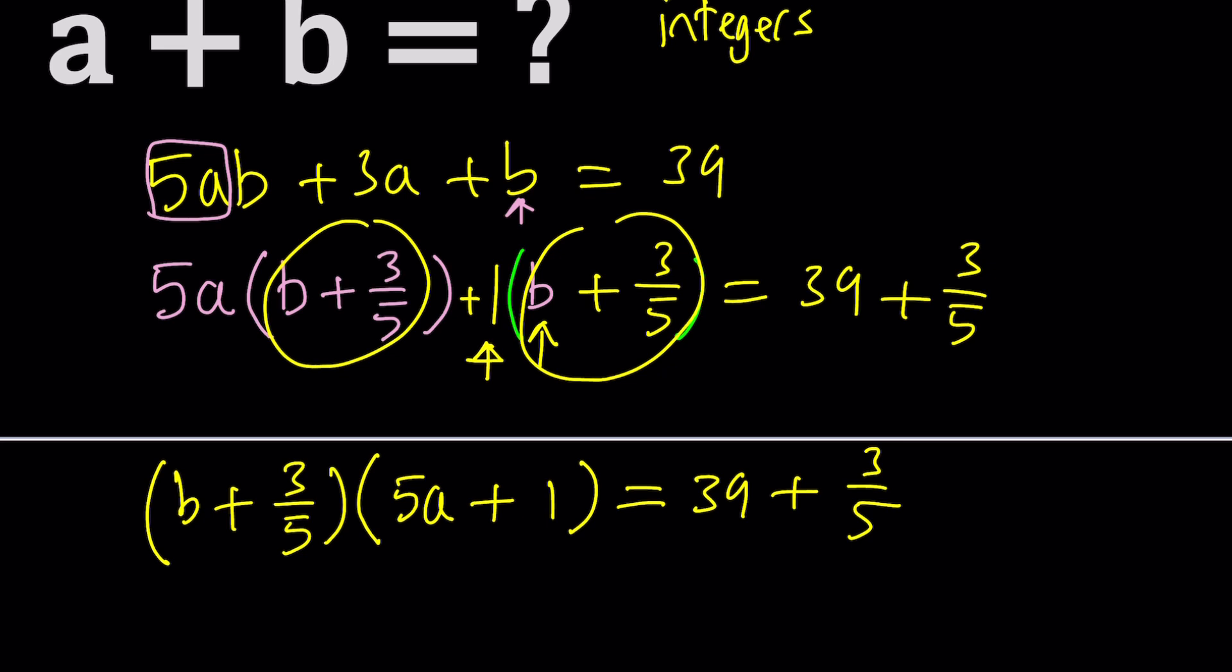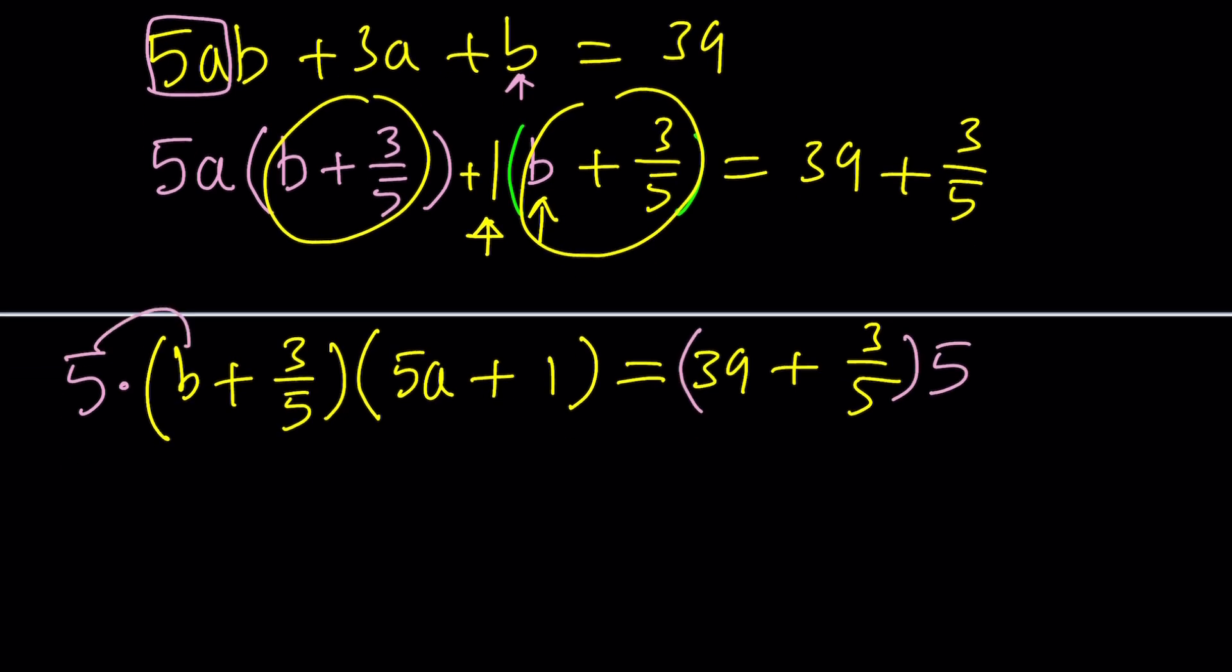Because our goal is to get rid of the fractions, let's multiply both sides by 5. When you multiply by 5 here, you're going to distribute it so you can get rid of the fraction. That'll give you 5b plus 3. And then this will give you 5a plus 1. On the right-hand side, you can distribute this. That's going to give you 5 times 39, which is 195, and then the 5s are going to cancel out and we're going to end up with a 3, which means you're getting 198.